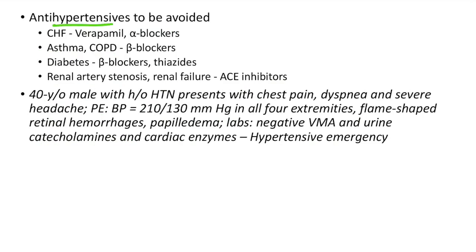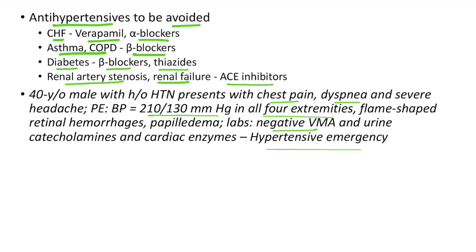Antihypertensives to avoid: in congestive heart failure — avoid verapamil and alpha blockers; asthma/COPD — avoid beta blockers; diabetes — avoid beta blockers and thiazides; renal artery stenosis and renal failure — avoid ACE inhibitors. Clinical case of hypertensive emergency: A 40-year-old male with history of hypertension presents with chest pain, dyspnea and severe headache. Physical examination reveals BP of 210/130 mmHg in all 4 extremities, flame-shaped retinal hemorrhages and papilledema. Lab investigations show negative VMA, urine catecholamines and negative cardiac enzymes — these rule out secondary causes. This is a classic case of hypertensive emergency.